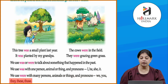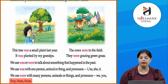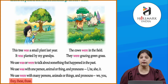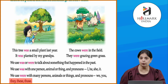Look at this example: 'This tree was a small plant last year.' Yeh pichle saal ek chota sa paudha tha. Ab yeh kya ban gaya hai? Tree! It was planted by my grandpa. Toh yeh tree jab tree nahi tha, paudha tha — yeh paudha kisne lagaya tha? Grandpa ne. So we are talking about something that happened in the past — jo pehle hua hai.